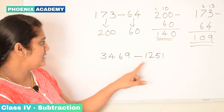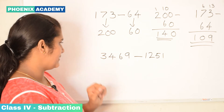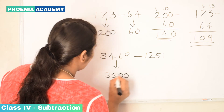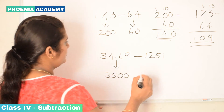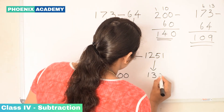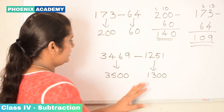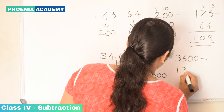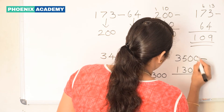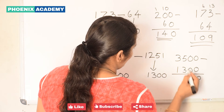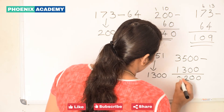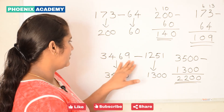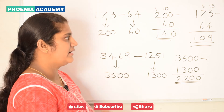Let's find the estimated difference of these numbers also. 3,469 we round off to 3,500. 1,251 we round off to 1,300. Then we subtract: 3,500 minus 1,300. 0 minus 0 is 0, 5 minus 3 is 2, 3 minus 1 is 2. The estimated difference of 3,469 and 1,251 is 2,200.